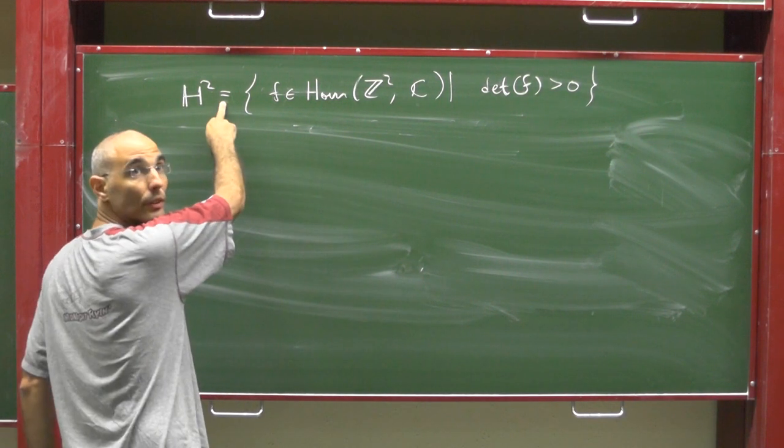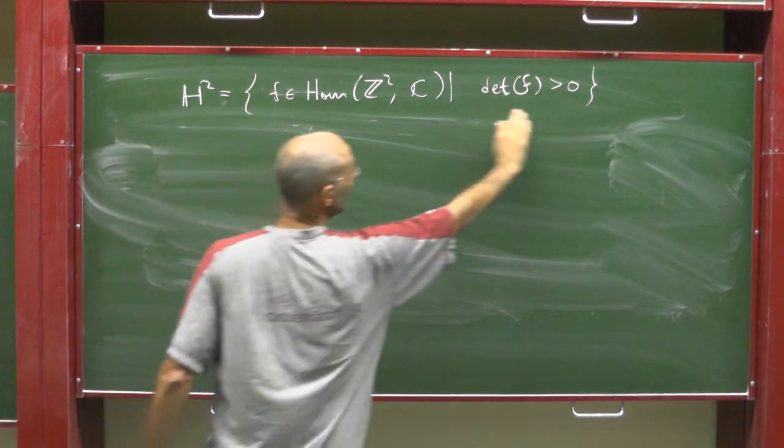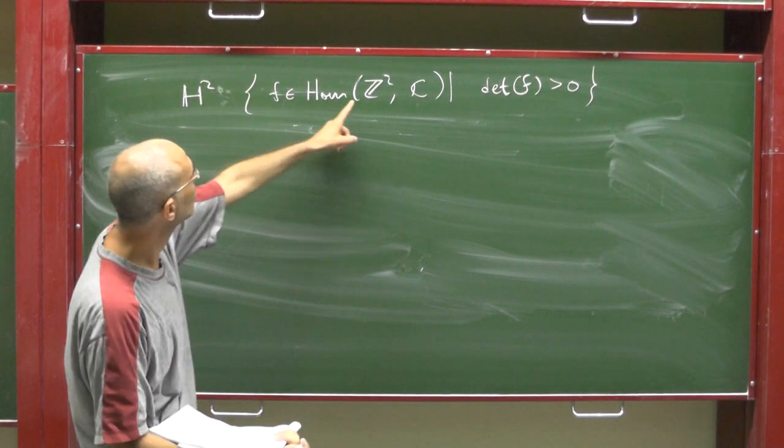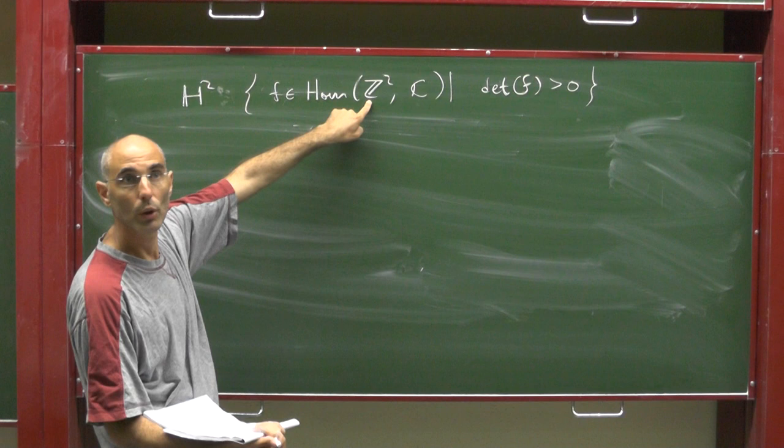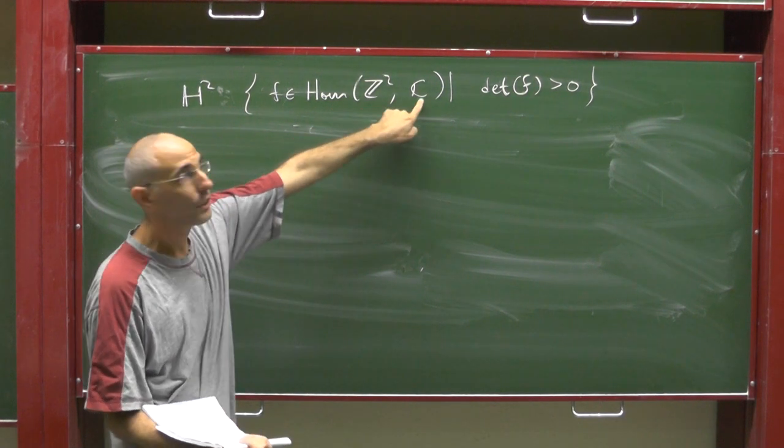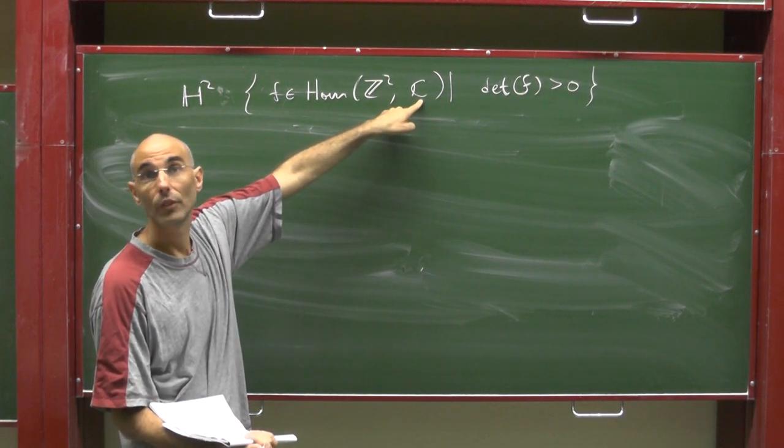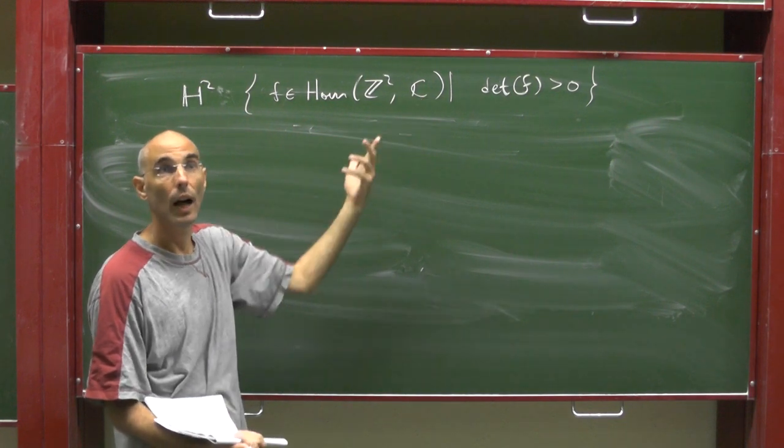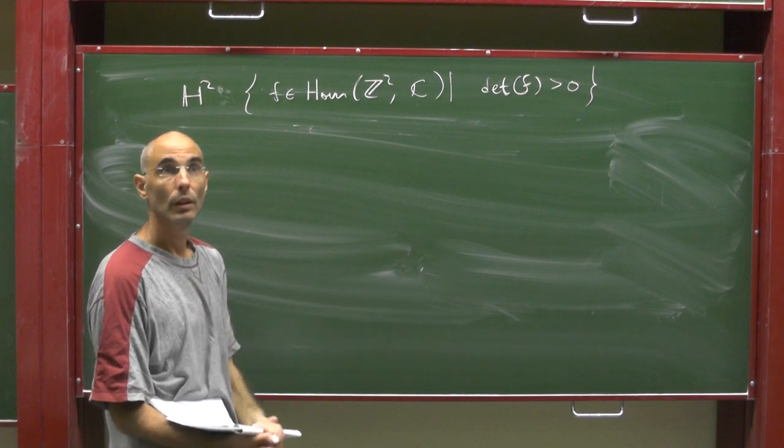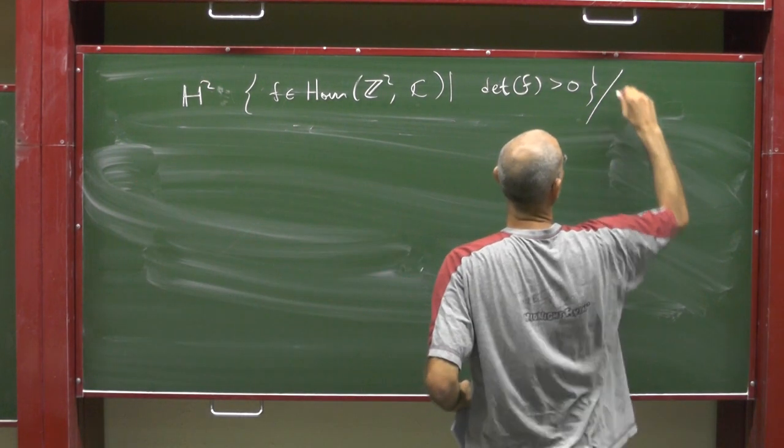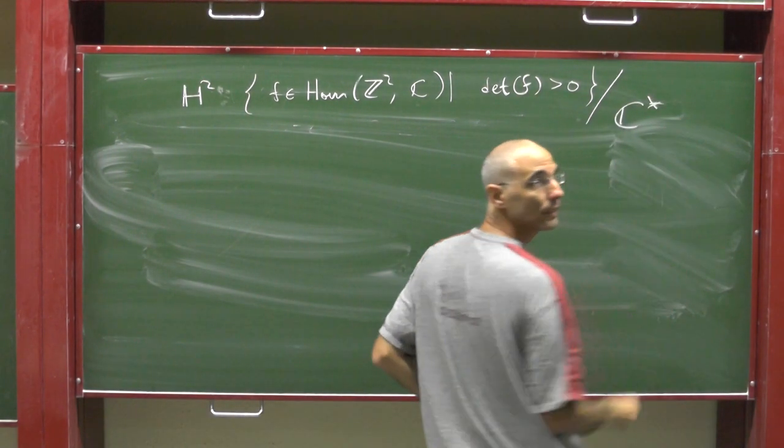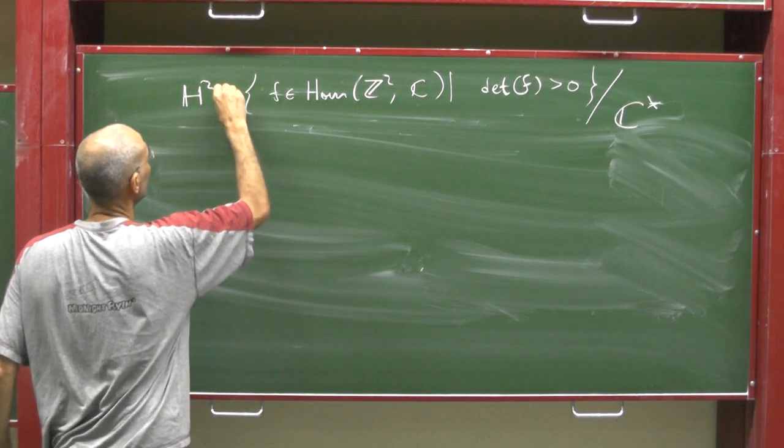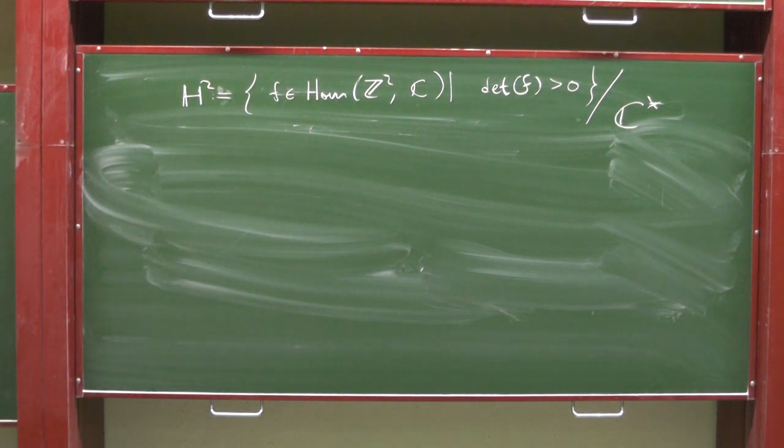On this space, there is an action of SL2Z by pre-composition, and an action of C star by post-composition, C star multiplication by C. Let's divide this. This is the rotation and scaling that I was dividing by before. Now I want to define this. This is H2.